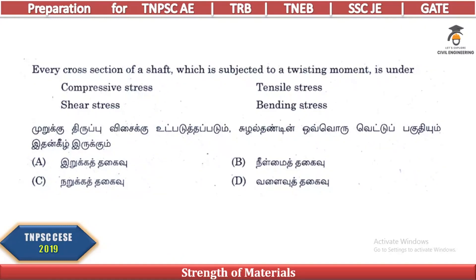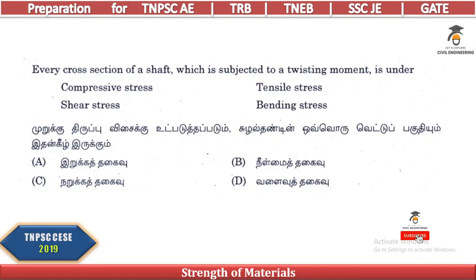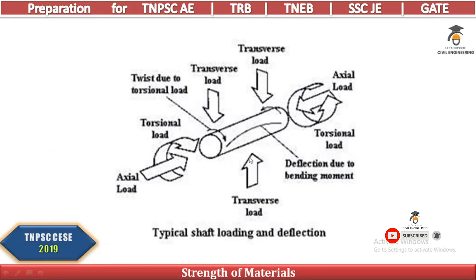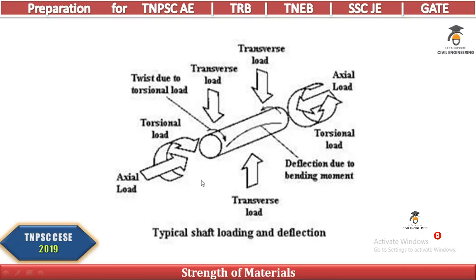Every cross-section of a shaft which is subjected to a twisting moment is under what stress? Considering the axial load, the torque, and the shear load acting on the shaft, the answer is shear stress.